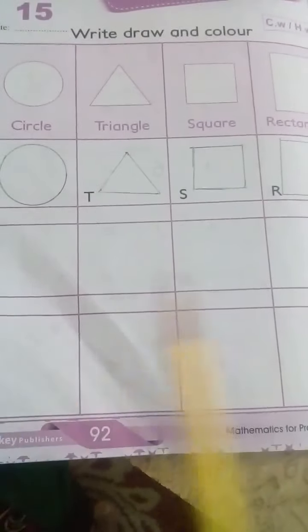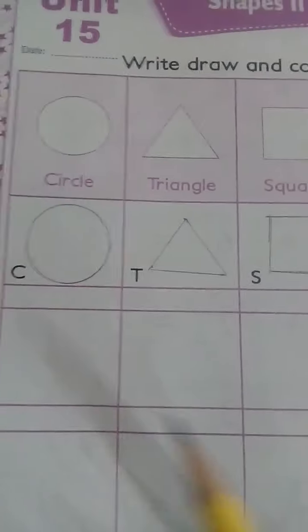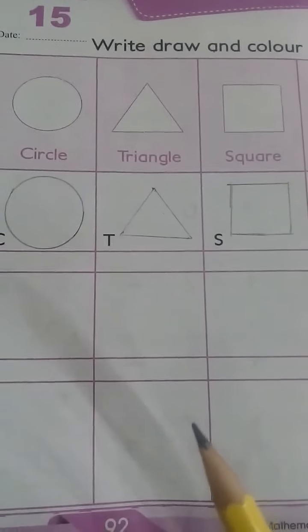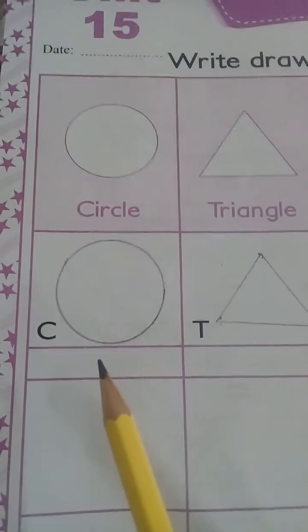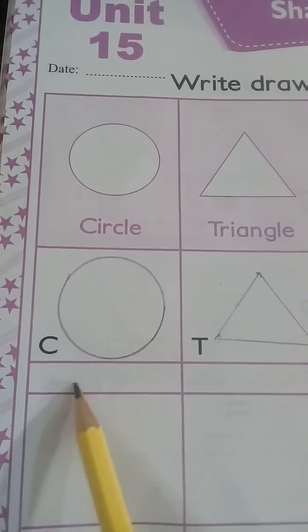Where you need to draw which shape, you will decide. Draw the shapes and then color any color you want. As you wish, you can give any color to these shapes. And then you will write spelling of the circle here.